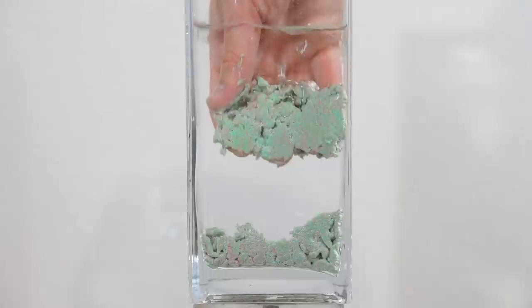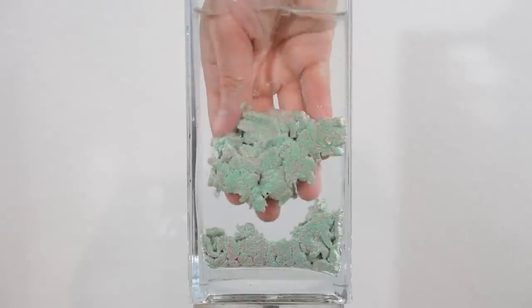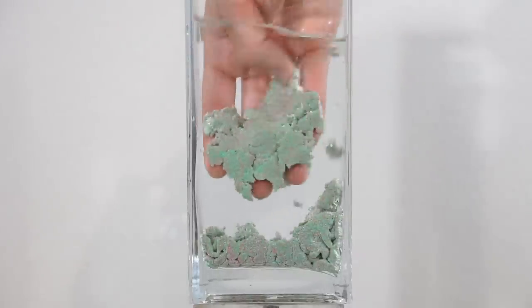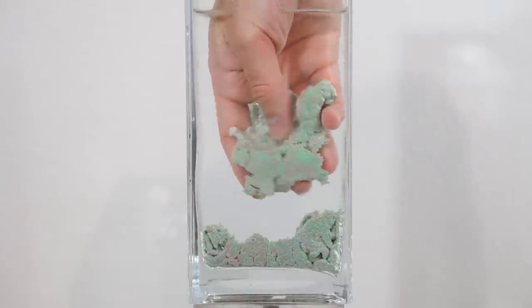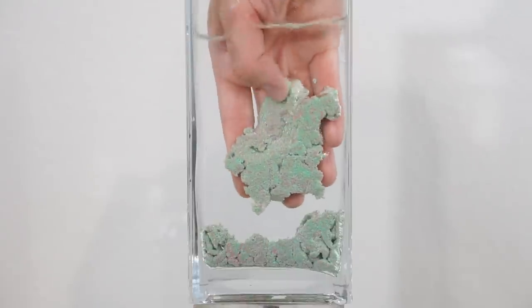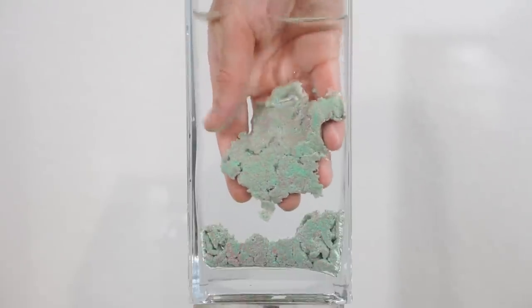So before I put it in the vacuum chamber, let me explain why it's acting like this and see if you can predict what's going to happen in the vacuum chamber. So the reason that it clumps together is because all of the sand is hydrophobic. It wants to avoid water, but it will attract air.